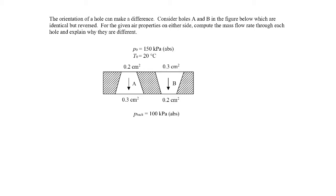Here we have a plate with two different types of holes. The first hole starts with a narrow opening that expands to a larger opening — a diverging section. The other hole starts with the larger section then goes into a smaller section — a converging style hole. We have stagnation conditions on the top side and back pressure on the bottom side, and we're asked to find the mass flow rate through each hole and explain why the mass flow rates are different.